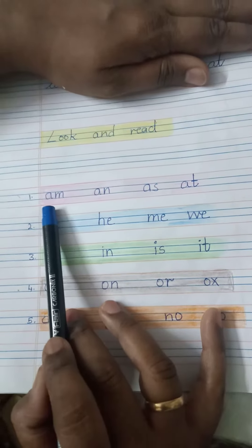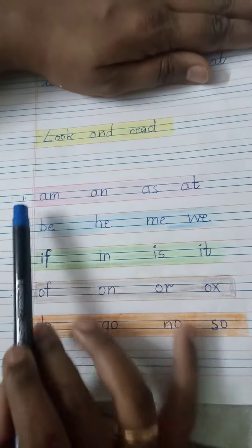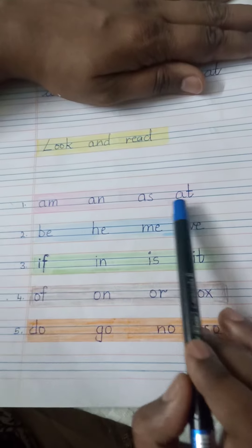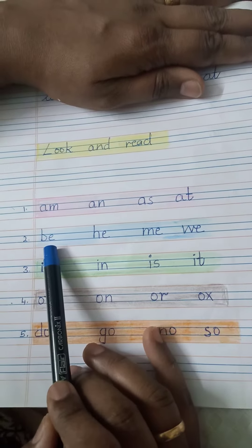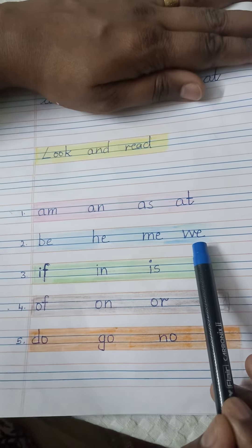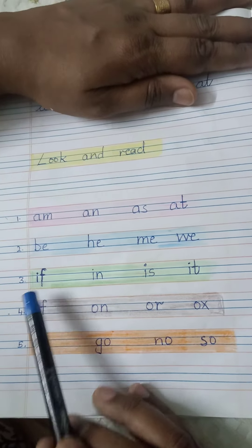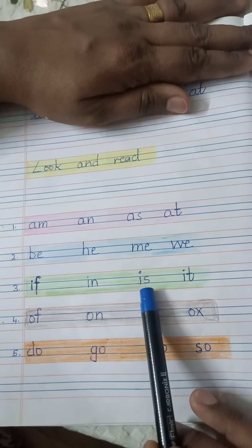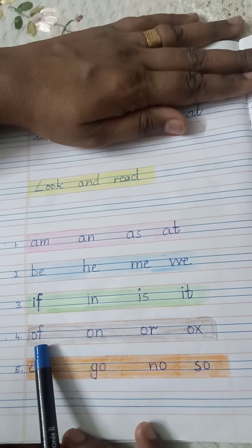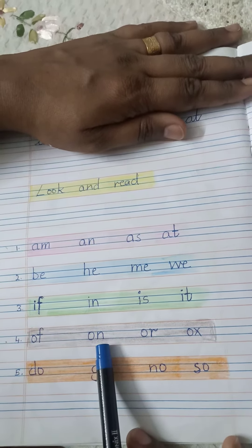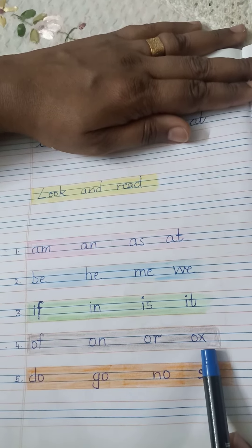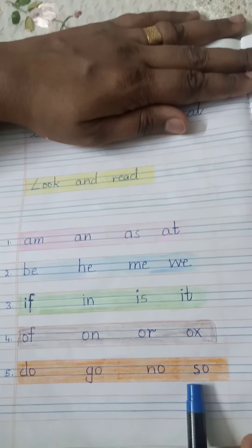We'll start from here first. We'll revise all the words: A-M, A-N, A-S, A-T, B-E, B-H, E-M, E-W, E-V, I-F, F-I, I-N, N-I, I-S, I-T, O-F, O-N, O-R, O-X. Now we'll start reading from here.